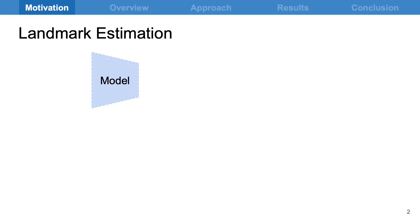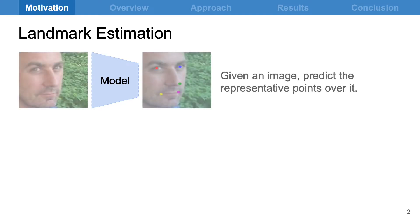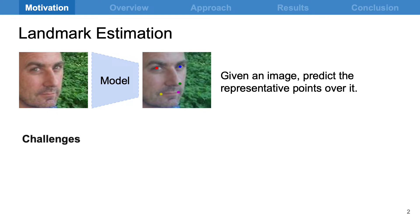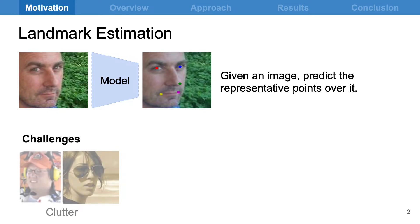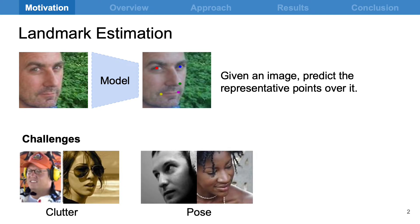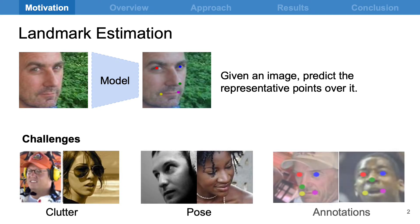Landmark estimation is the task of learning a model which, when given an image, predicts representative points over it. These points are 2D locations over the image. Generally, these models are trained on a category-specific dataset. The challenges in this task are that of clutter on the object, pose variations of the object, and need for landmark annotations. The annotations are expensive and laborious to obtain.